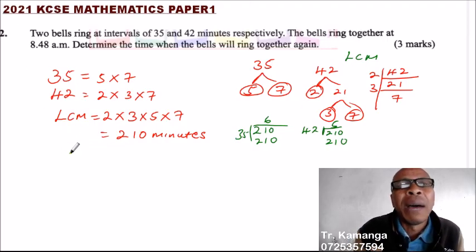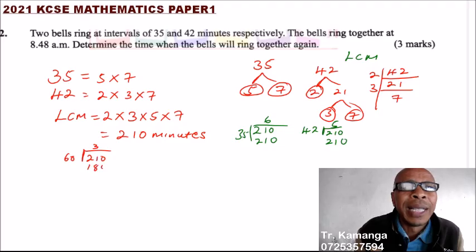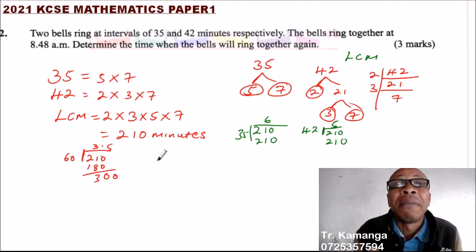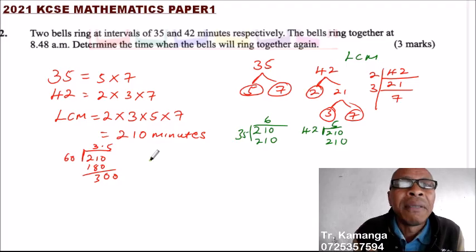You divide 210 by 60, you will be able to get, it is 3. That is, 3 is 180, 0, and this is 3. Point, you get 5. So, 3 and a half hours.